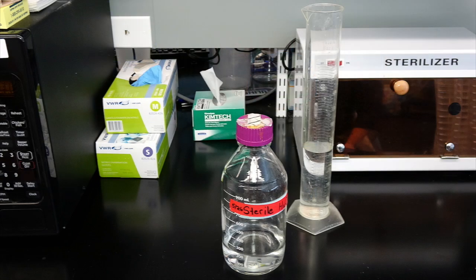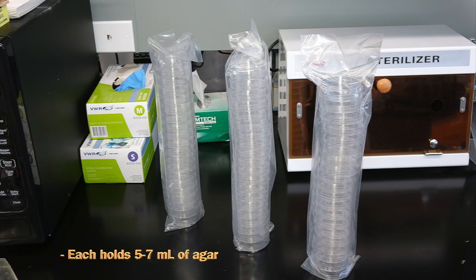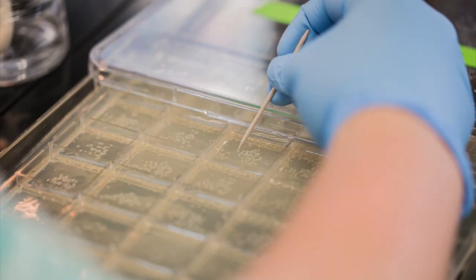Next, we have our sterile water. Our goal is to make 30 gels in 60 mm by 15 mm plates, each of which can hold roughly 5 to 7 ml of LB agar. On plates this size, you can easily distinguish about 100 individual colonies. If you're going to be doing high-volume screening, we recommend larger plates.